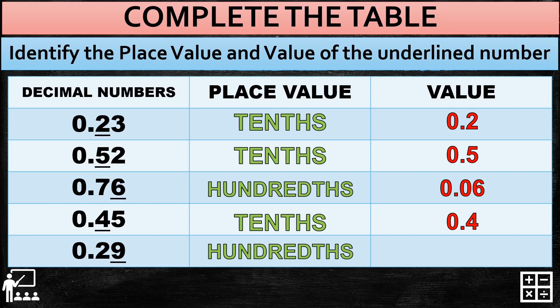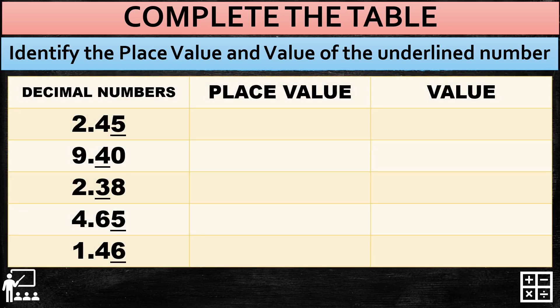Now let's try the activity. Again, identify the place value and value of each underlined number. The underlined numbers are 5, 4, 3, 5, and 6. I'll give you 20 seconds for this activity, and after that we'll compare answers. Your 20 seconds starts now.